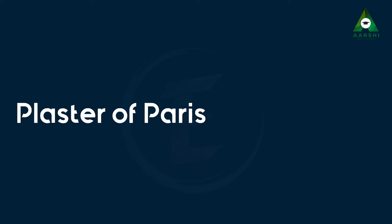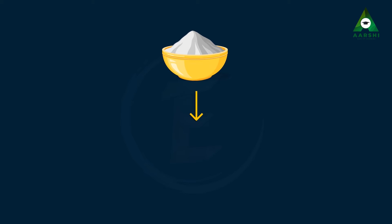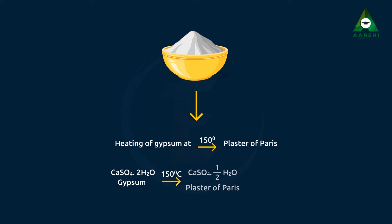Plaster of Paris is obtained by heating of gypsum at 150 degrees C. Gypsum is a hydrated salt of calcium, CaSO4·2H2O. At 150 degrees C, it gives CaSO4·½H2O (Plaster of Paris) plus 1½H2O. After addition of water, Plaster of Paris is again converted into gypsum.